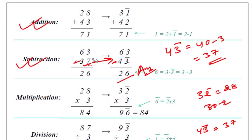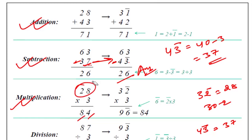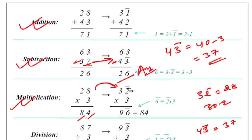Yes — because this is subtraction, we will have to add it. Got it? Similarly in multiplication — we multiply 8 into 3 that is 24, and 2 times 3 is 6, plus 2 that is 84. But what I am going to do is make 28 equal to 32 bar.